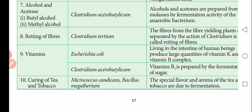The next beneficial activity is curing of tea and tobacco. The bacteria Mycococcus candidus and Bacillus megaterium are involved. The special flavor and aroma of tea and tobacco is due to bacterial fermentation. These are the beneficial activities of bacteria in industrial uses.